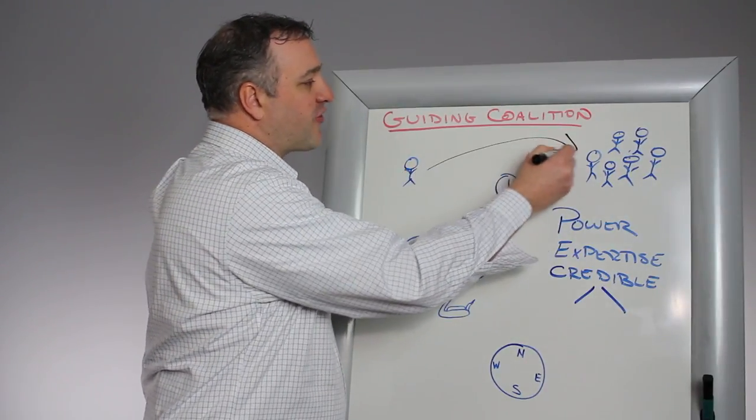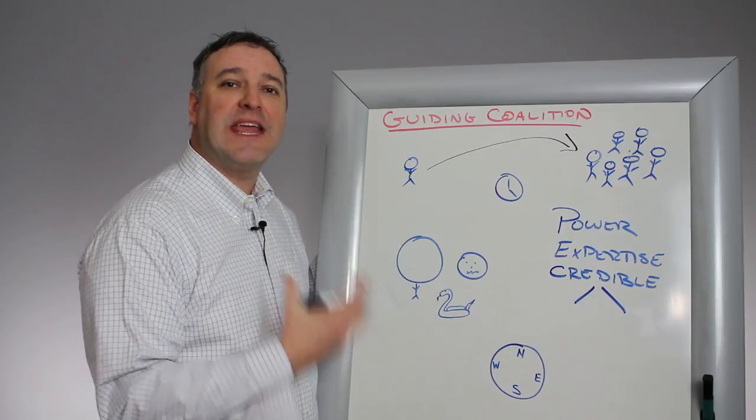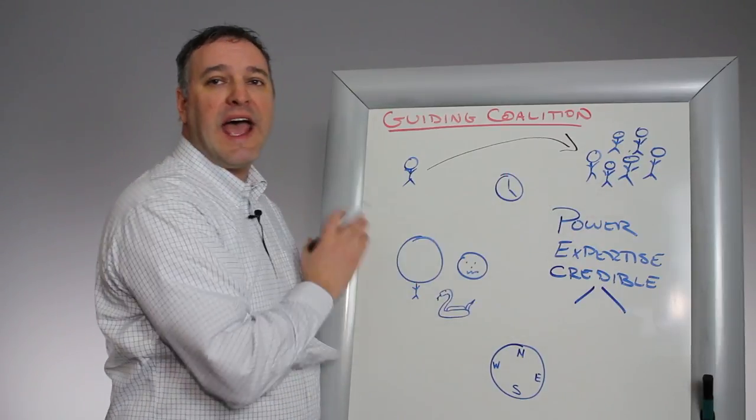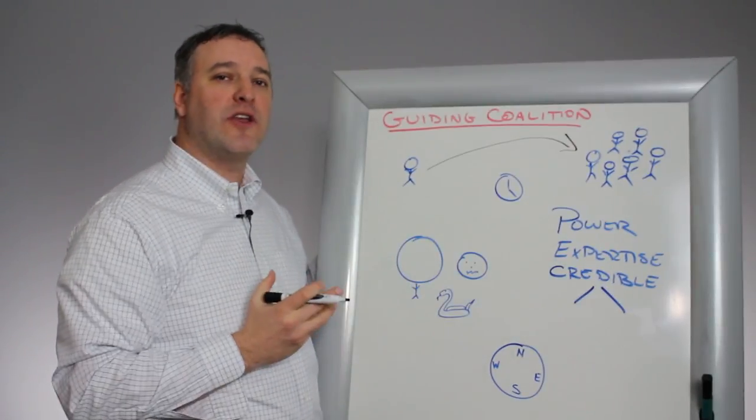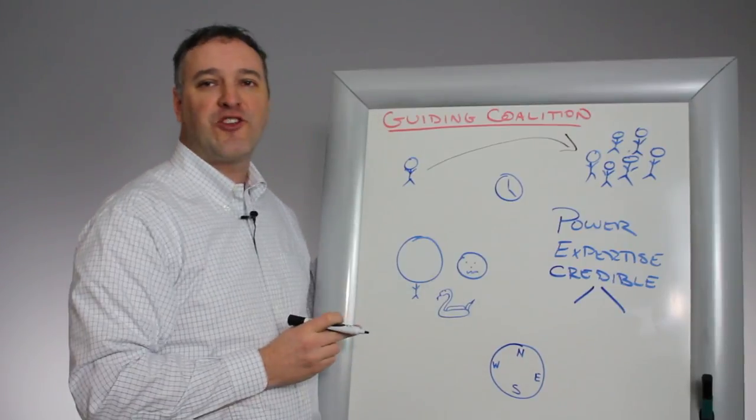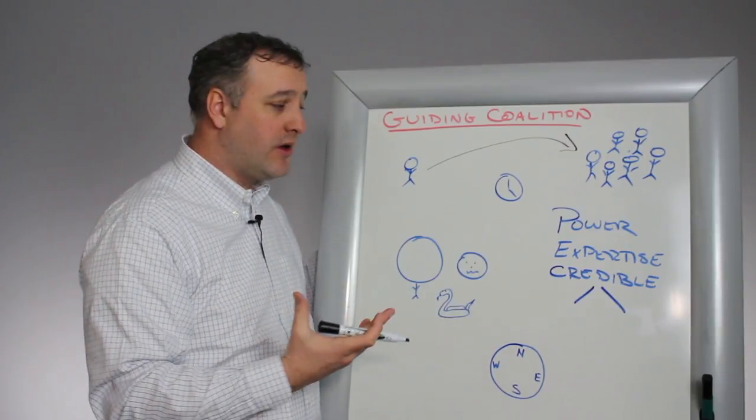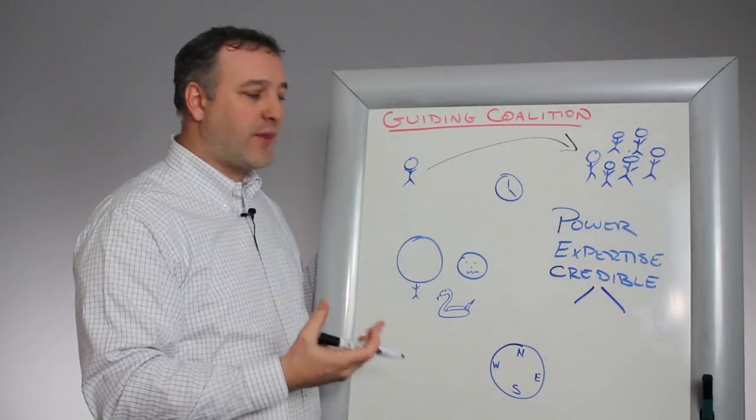So he favors the task force approach. But he also talks about how you have to have the same characteristics within that group as this individual did. You have to have enough power in the organization to get people to pay attention. You have to be very knowledgeable about the topic and be an expert in the field. You also have to be credible. You have to be a person who is known for getting things done.